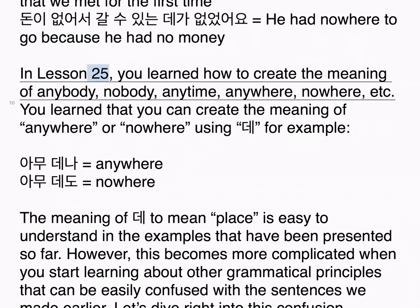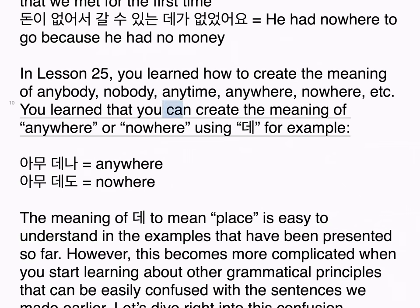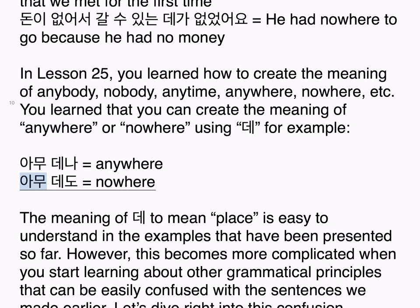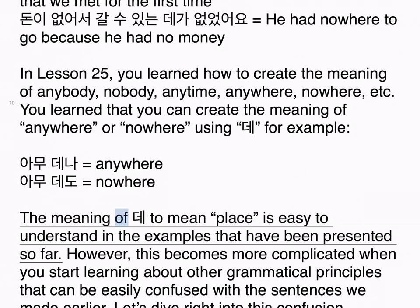In lesson 25, you learned how to create the meaning of anybody, nobody, anytime, anywhere, nowhere, etc. You learned that you can create the meaning of anywhere or nowhere using 데. For example: 아무 데나 equals anywhere, 아무 데도 equals nowhere. The meaning of 데 to mean place is easy to understand in the examples presented so far.